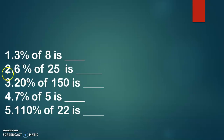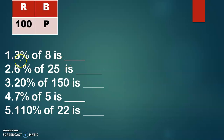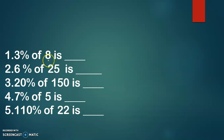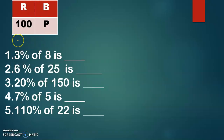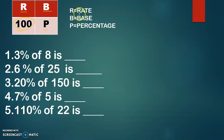Let's try to solve these five problems in finding the percentage. The rate and the base are given in these particular problems, so we're going to use the Cabinio Square. Let me introduce to you the Cabinio Square and this is how it looks like. In the Cabinio Square, 100 is constant. We have R, B, and P — wherein R stands for the rate, B stands for the base, and P stands for the percentage.